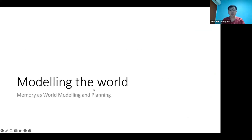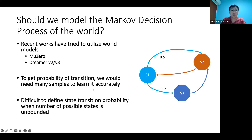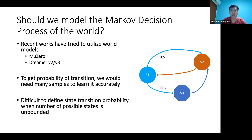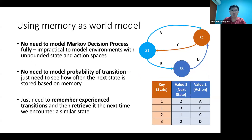Next, modeling the world. Traditional approaches use Markov decision processes — such as MuZero, learning transition probabilities between states, or Dreamer v2 and v3, learning latent spaces. However, to get transition probabilities accurately, you need to sample multiple times, requiring a lot of data. It is also very difficult when there are so many different states — probability modeling can become intractable.